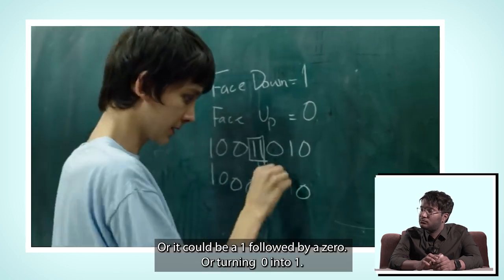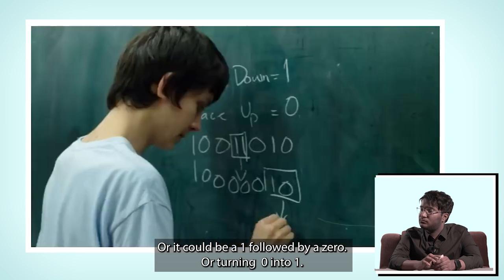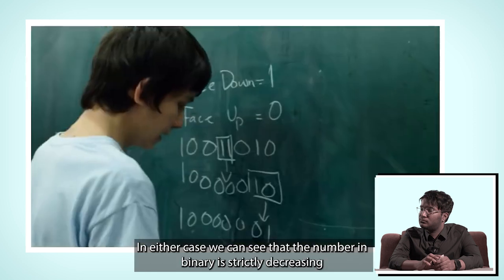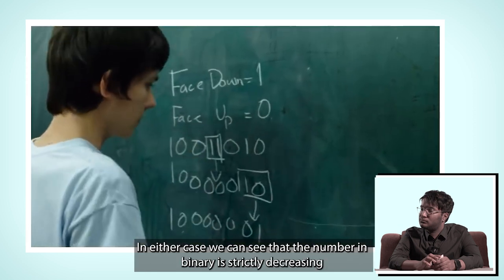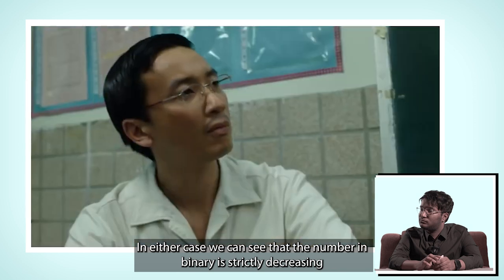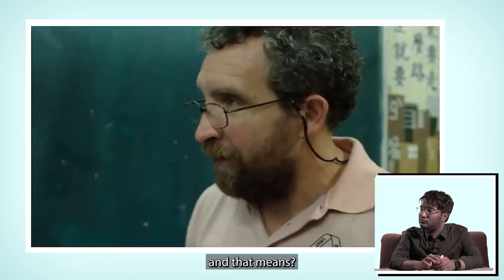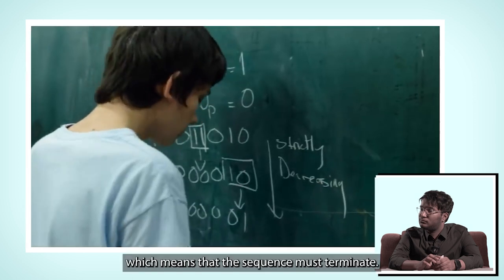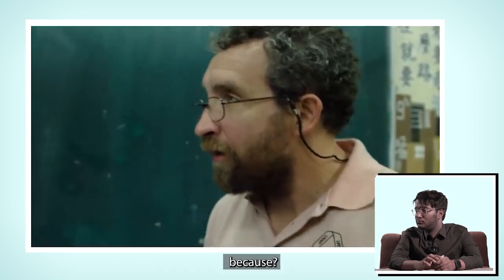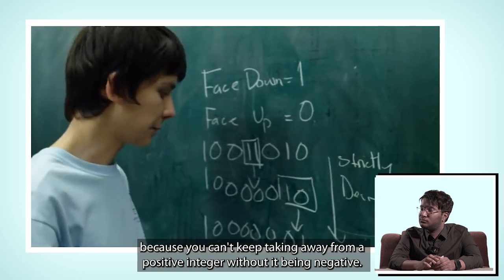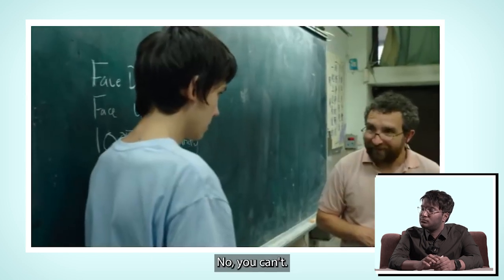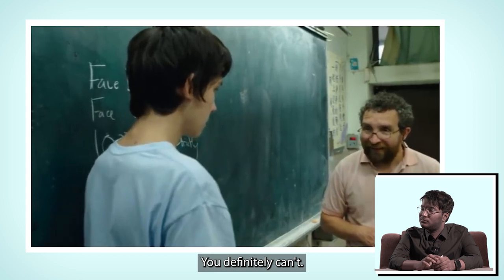Or it could be a one followed by a zero turning into a zero followed by a one. In either case, we can see that the number in binary is strictly increasing. And that means, which means that sequence must terminate. Because? Because you can't keep taking away from a positive integer without it turning negative. No, you can't. You definitely can't. Good work.